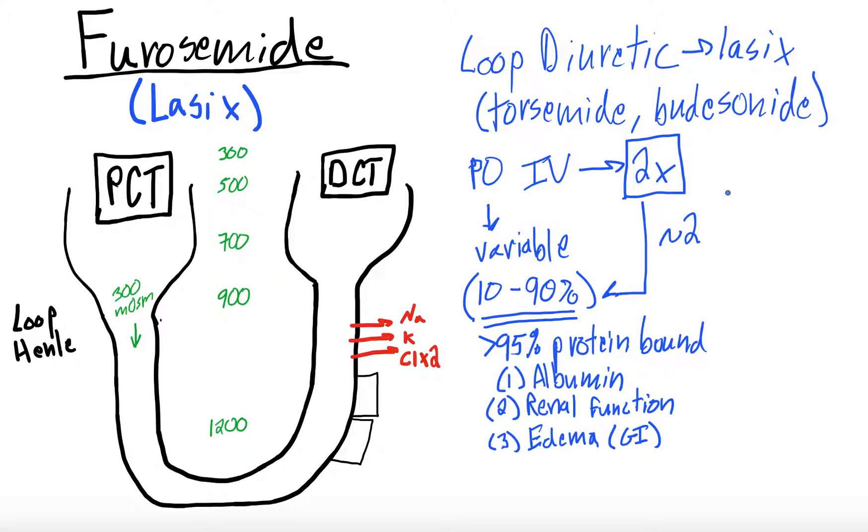So you took some IV Lasix because you don't want this highly variable bioavailability in one of your acutely ill patients. IV Lasix, the diuresis starts usually within about 30 minutes. I'm just going to draw the circle of IV over here so you know what I'm talking about. The peak is about two hours, and it lasts for about six to eight hours.